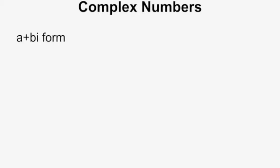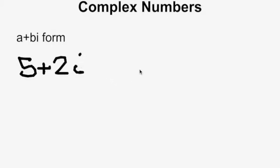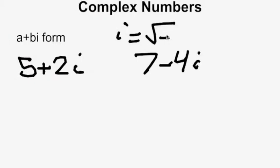The real and imaginary numbers fall beneath complex numbers. Complex numbers are at the top of the number hierarchy, and complex numbers are any number that can be expressed in a plus bi form. Examples of complex numbers are 5 plus 2i or 7 minus 4i. Remember, i equals the square root of negative 1.